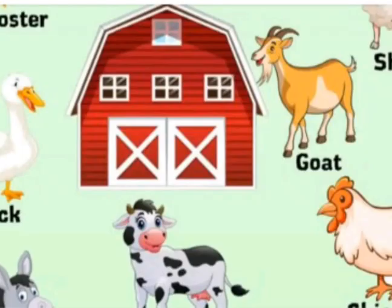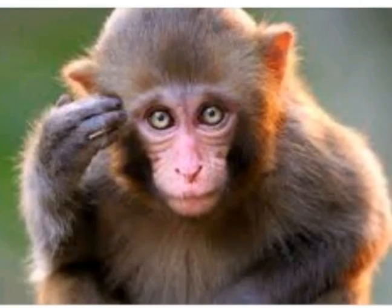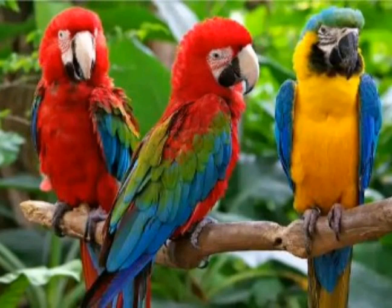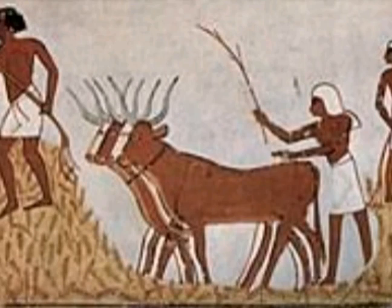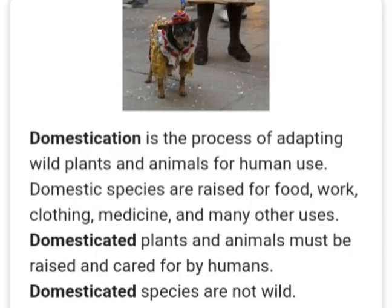Domestic animals can be great for commercial purposes such as food, experiments, and finance. You can sell or rear domestic animals for money. Examples include sea monkeys and parrots — they are wild animals but human beings bring them home. They will soon adapt to the domestic system because domestication is a gradual process.